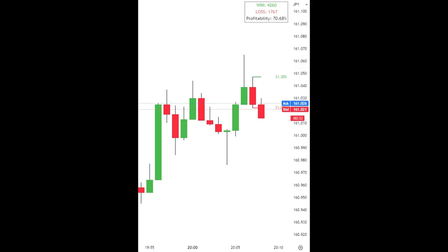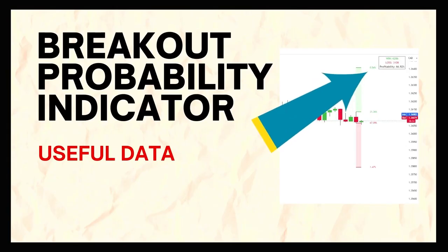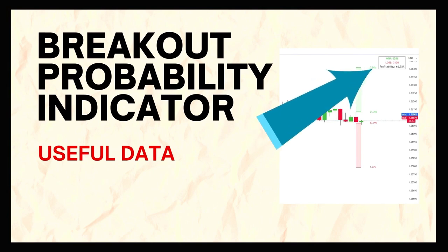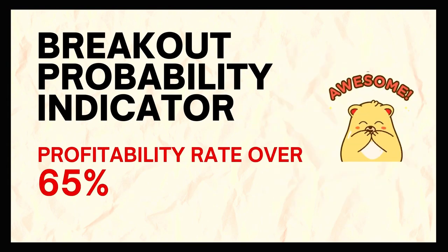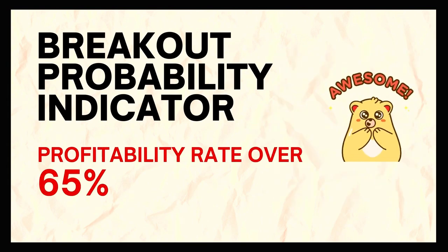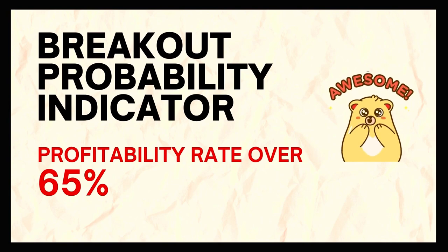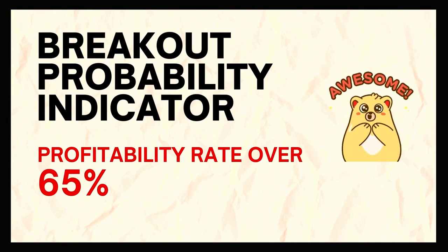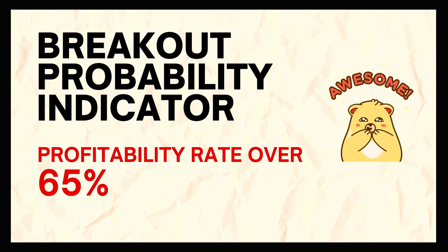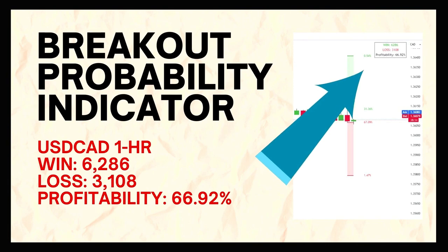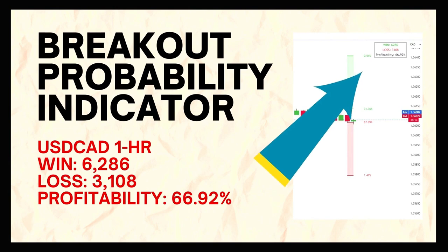I like this indicator for another reason: in a small window on the chart, it actually tells you what percentage of its predictions were winners for a certain time frame over a certain period of time. Roughly speaking, the indicator offers a profitability of over 65%, which is awesome. Not many indicators on the market offer such data for such diverse time frames and asset classes. For example, the probability indicator has a strong performance record for the one-hour time frame of the USDCAD Forex pair.